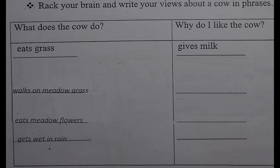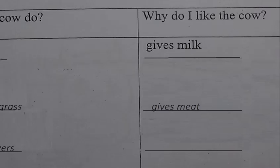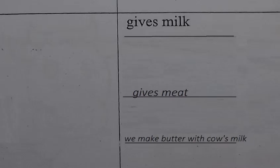Now come to the left side — this is about why do I like the cow. We will write the benefits of cows. Number one, 'gives milk' is already written. Now write 'gives meat' — G-I-V-E-S, M-E-A-T — because the cow gives us meat. Now write: 'We make butter with cow's milk.' W-E, M-A-K-E, B-U-T-T-E-R, W-I-T-H, C-O-W apostrophe S, M-I-L-K.